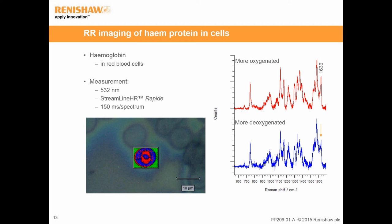Red blood cells carry and deliver oxygen around the body. Hemoglobin Raman signals were collected from a red blood cell by StreamLine HR repeat imaging using 150 ms per spectrum exposure time; as resonance Raman provides strong Raman intensity, collection can be as fast as 5 ms per spectrum. The peak at 1636 wavenumber is sensitive to oxyhemoglobin. The spectra indicated the red blood cell had a mixture of oxy and deoxyhemoglobin throughout, but the level of oxygenation varied across the cell. The 1636 wavenumber peak was lower in intensity in the blue spectrum, showing the heme in those regions was more deoxygenated.